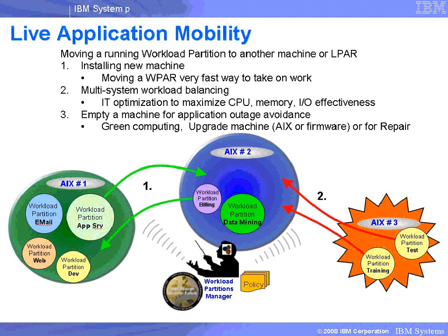Secondly, we have a balancing of workload across a group of machines. Perhaps we want to move them over for load balancing our CPUs to gain better performance. And thirdly, perhaps we want to take a machine down for a number of reasons. We might be doing green computing — we want to take a machine out to save the power over a weekend. Or perhaps we want to upgrade the copy of AIX or the firmware on the machine, or perhaps there's a repair action, such as adding extra adapters. For whatever reason, we can use mobility to move those workloads temporarily off a machine.